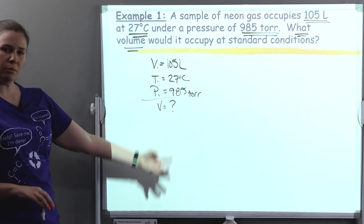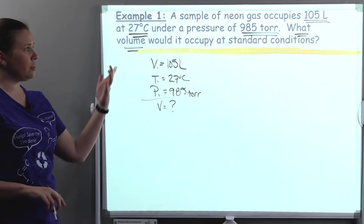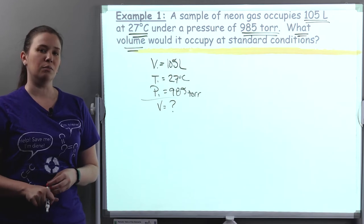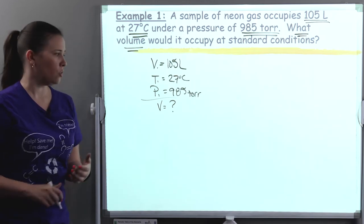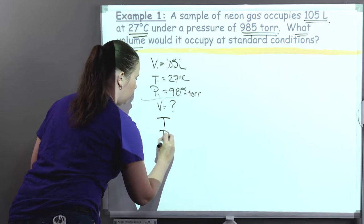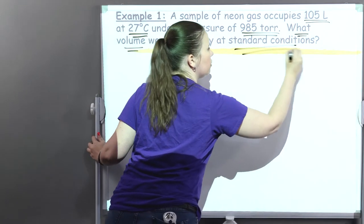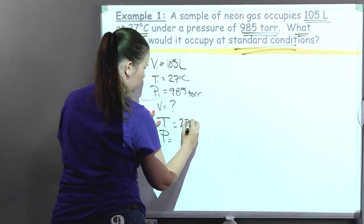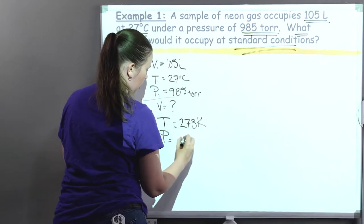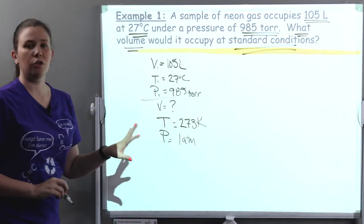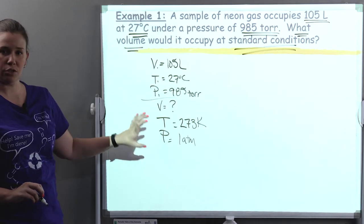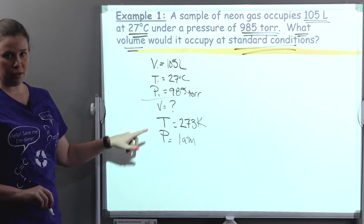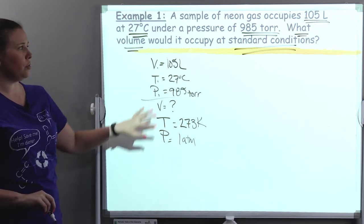I'm looking for a new volume, but what are the new conditions? Well, all it says is standard conditions — that would be STP. So what would be the temperature and pressure under standard conditions? You should know this or you need to memorize this: the temperature is 273 Kelvin and the pressure is 1 ATM. These are always going to be true for standard conditions. For pressure, you may also see it called normal pressure.